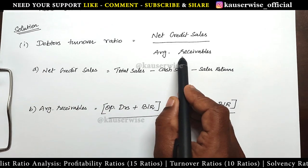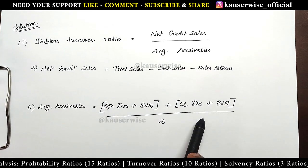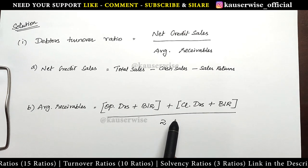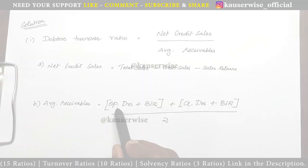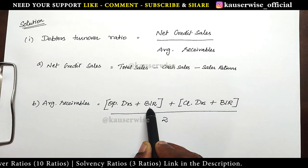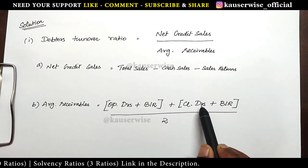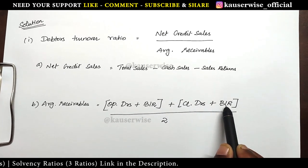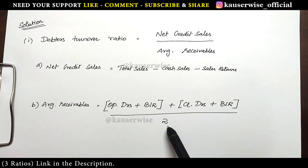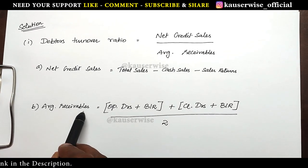The next element is average receivables. The formula is: opening balance of debtors and bills receivable, plus closing balance of debtors and bills receivable, divided by 2 — and you will get average receivables.